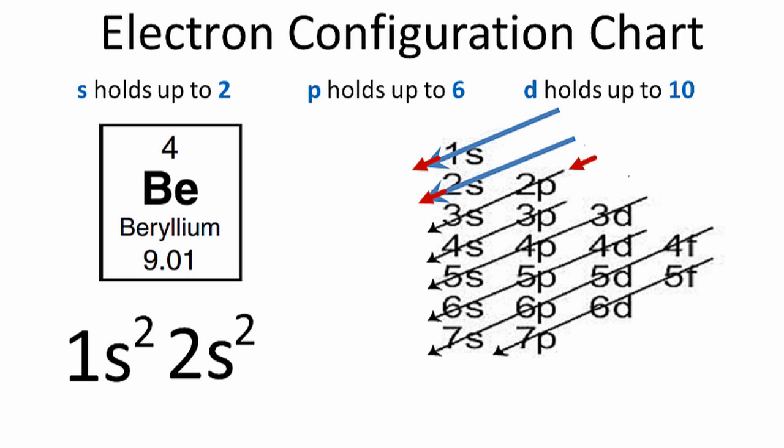If we had an element with more electrons, we would just continue into the next row of the table. We'd go down to the 2p, the 3s, and we'd add electrons until we've used all the electrons for that element.